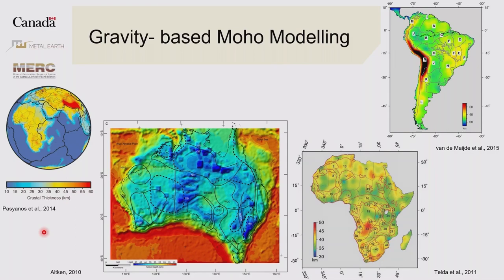We also have other ancient terrains — Ilgarn in Australia, Africa, South America — where gravity data has been used to create moho topography models and crustal thickness. But really what we're trying to do is work at a much finer scale, and actually be able to pick out where some of these boundaries are, as opposed to looking at overall thickness at the continental scale.